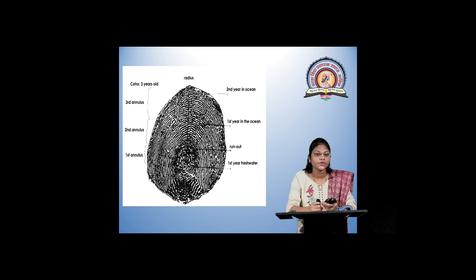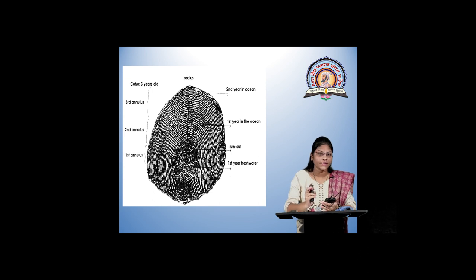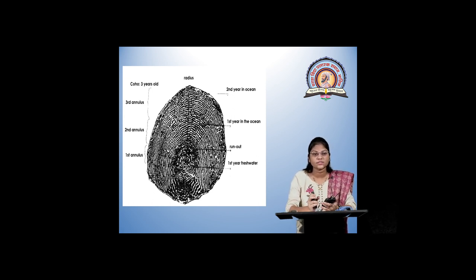Here we can see that many concentric lines are accumulated, from which we can conclude that the fish is three years old, because there are first annulus, second annulus, and third annulus rings concentrated.